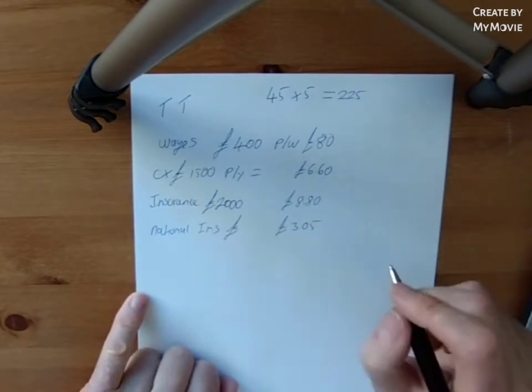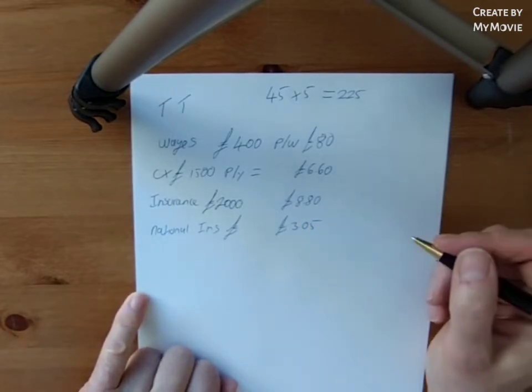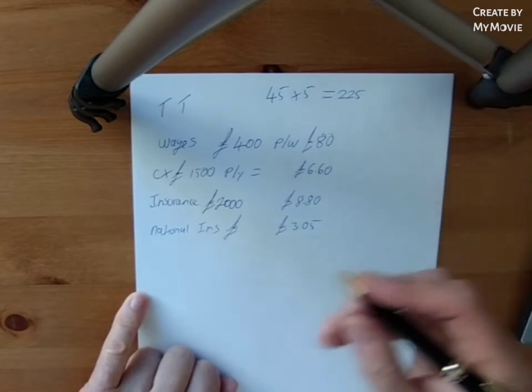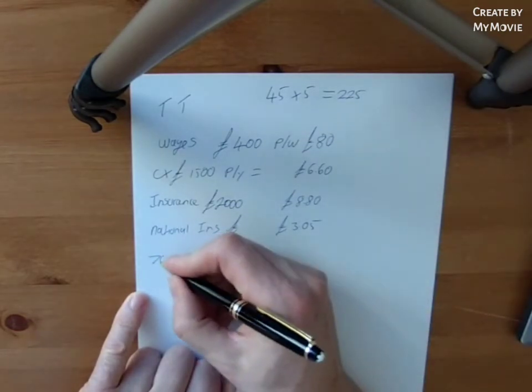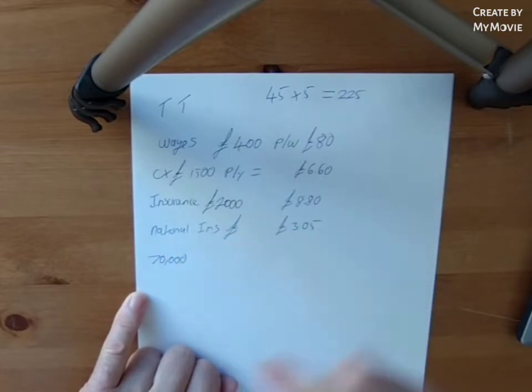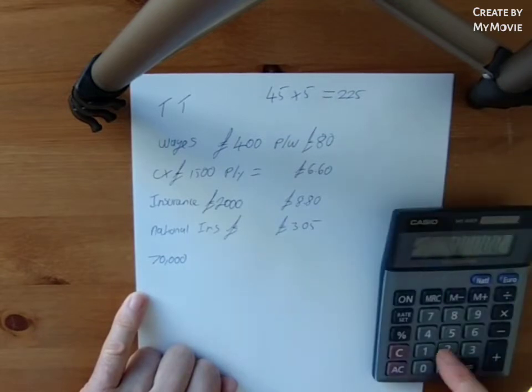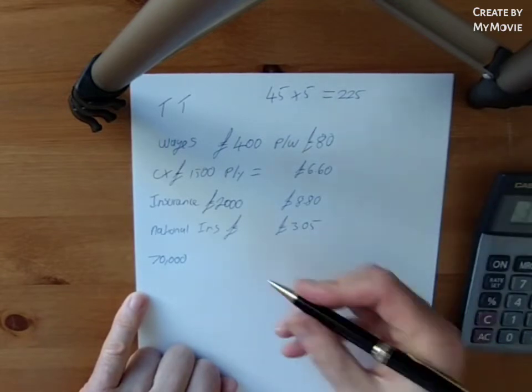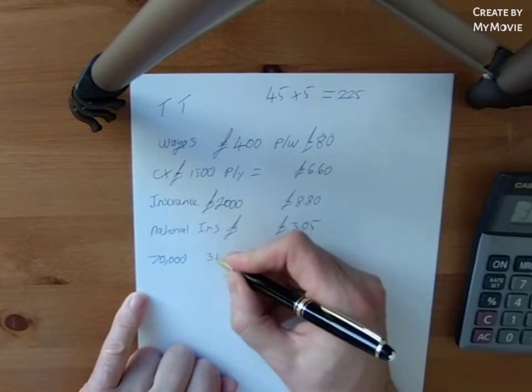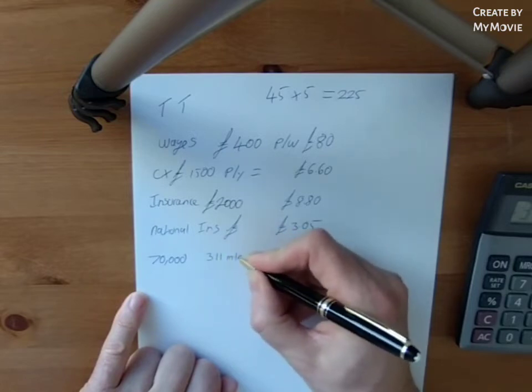Now, mileage. How many miles are you going to do a year? I'm guessing I'm going to manage 70,000 miles. So let's put 70,000 miles. But we're only working on 225 days. So 70,000, we're going to average 300 miles per day.